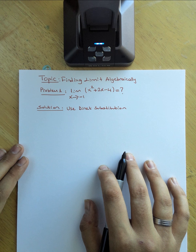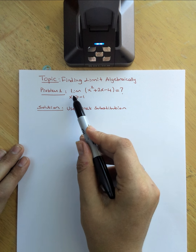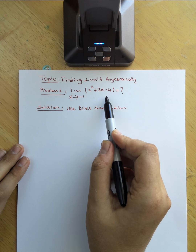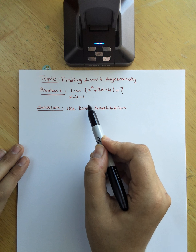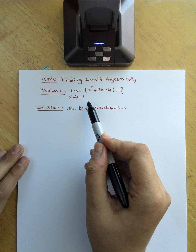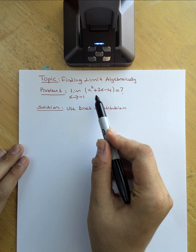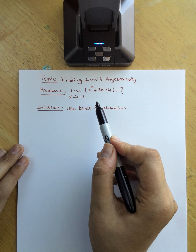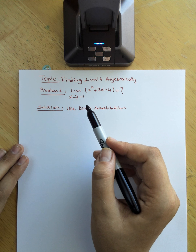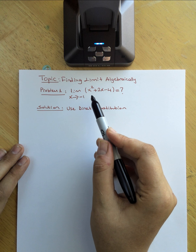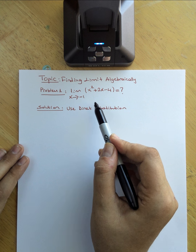In our very first problem, I see that limit x approaches negative 1. We have x squared plus 2x minus 4. I'm going to go ahead and use the direct substitution method because I don't see any rational expression that is going to cause our expression to go undefined when I substitute negative 1.